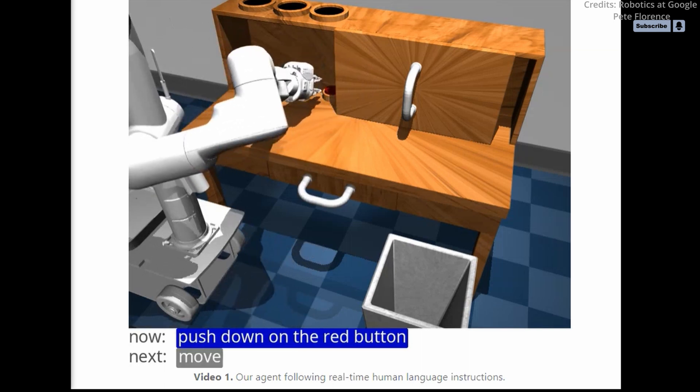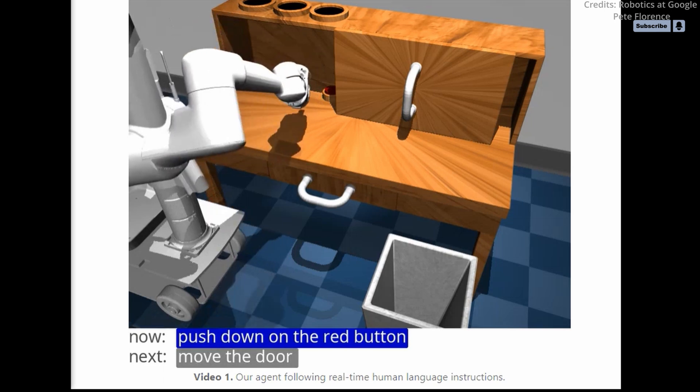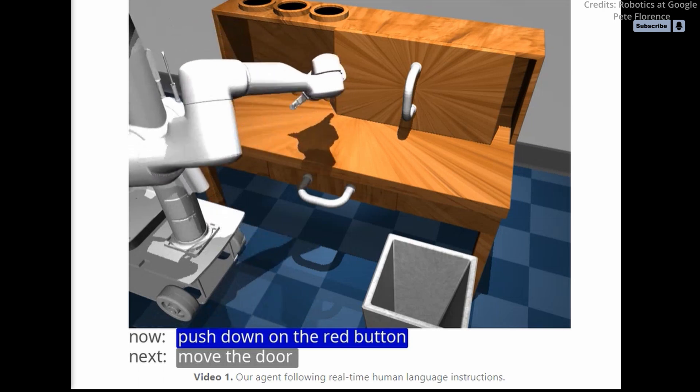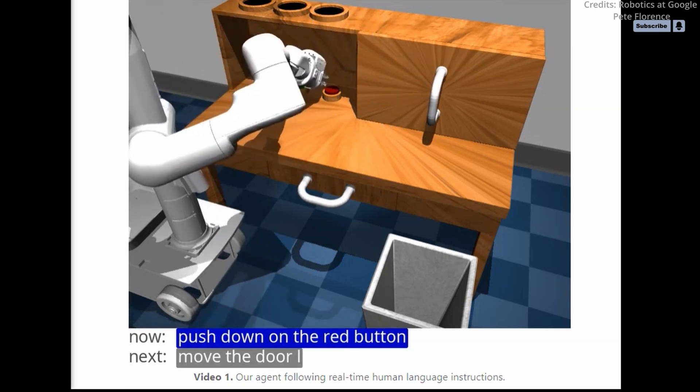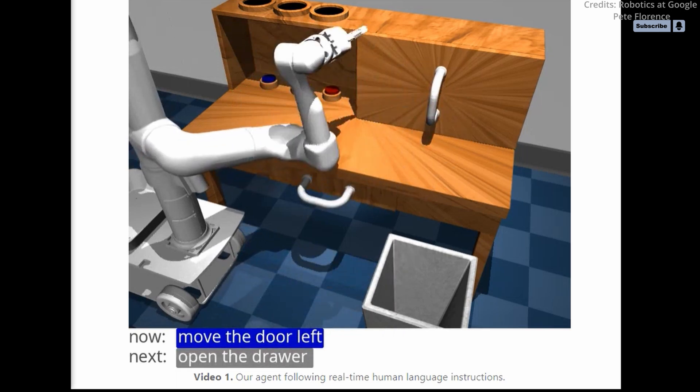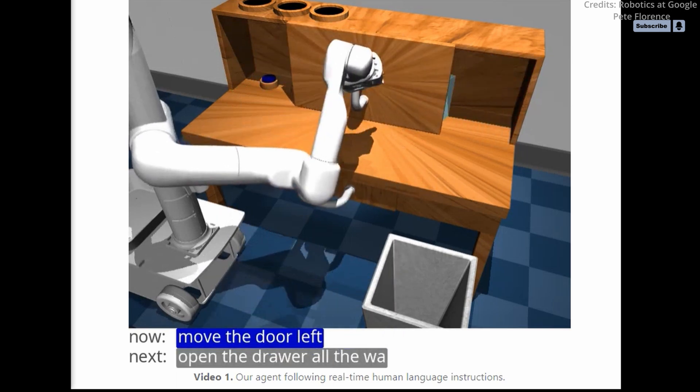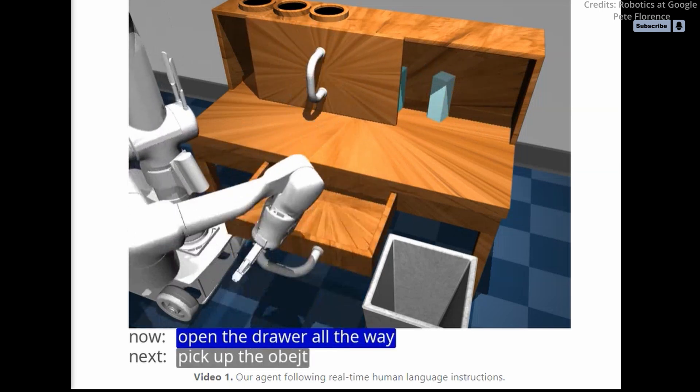One of the biggest challenges in using machine learning to enable robots to follow open vocabulary language is the large number of tasks that can be described using natural language. Existing multitask learning approaches use curated imitation learning datasets or complex reinforcement learning reward functions to teach each task, but this is difficult to scale beyond a small set of predefined tasks.